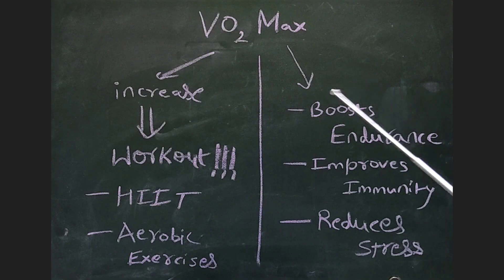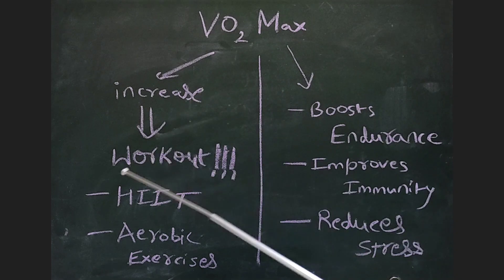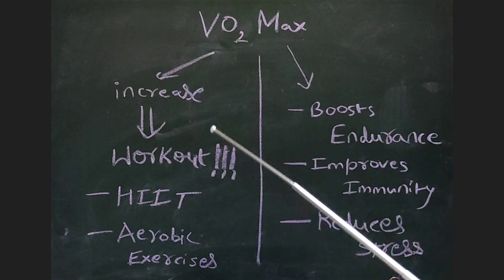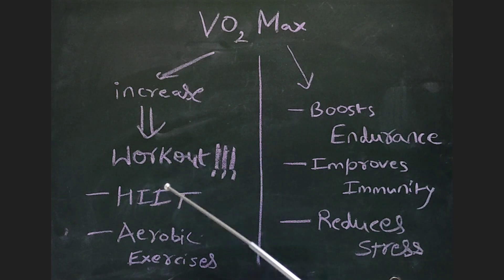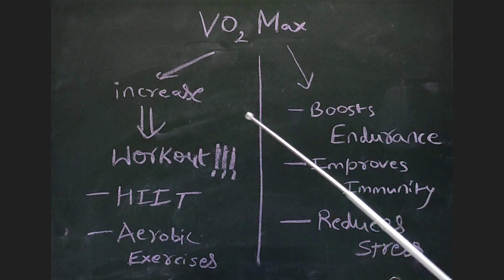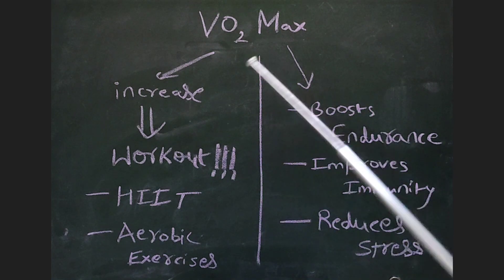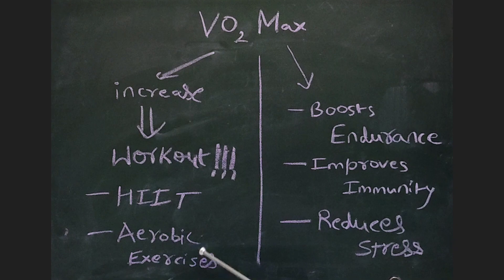Now, how to increase our VO2 max levels? It's simple. Just workout. But what type of workout should we do? HIIT workout, which is high intensity interval training workouts. If you want to learn more about that, we have a full video on it. The link will be in the description. Check it out. Also, aerobic exercises.